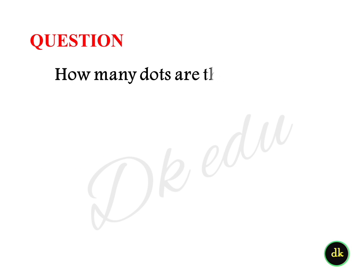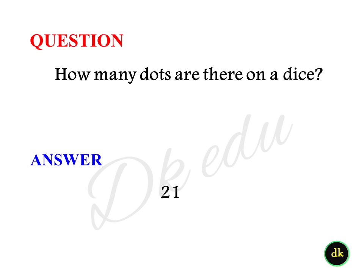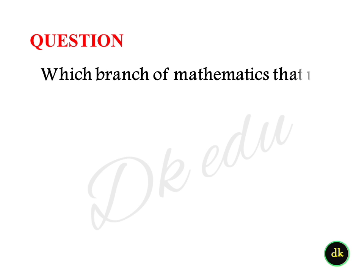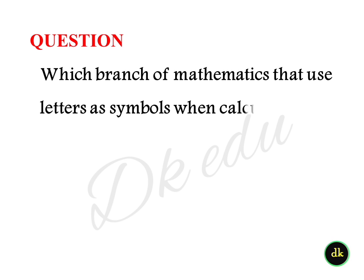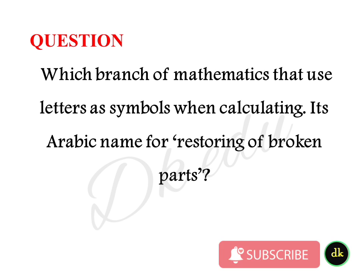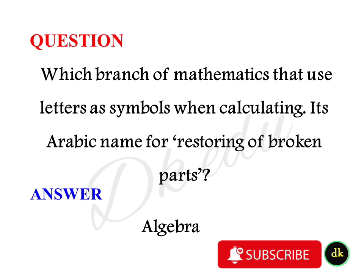How many dots are there on a dice? Answer: 21. Which branch of mathematics uses letters as symbols when calculating? Its Arabic name means 'restoring of broken parts.' Answer: Algebra.